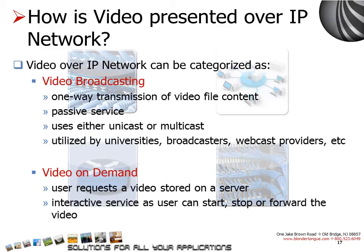How is video presented over an IP network? Video over IP network can be divided into three categories. First is video broadcasting: a network-based one-way transmission of video file content. The endpoint is merely a passive viewer with no control over the session. Video broadcast can be either unicast or multicast from the server. For example, video broadcasting can be used as a means of distributing trainings, presentations, meeting minutes, and speeches in a corporate environment.